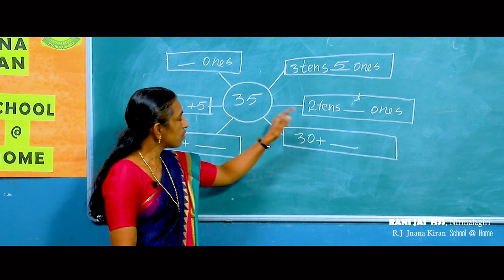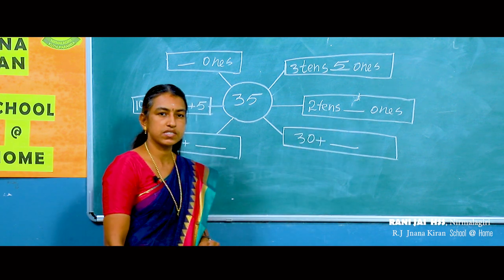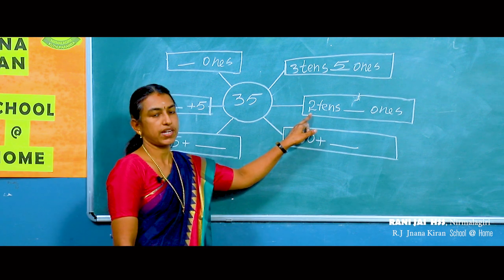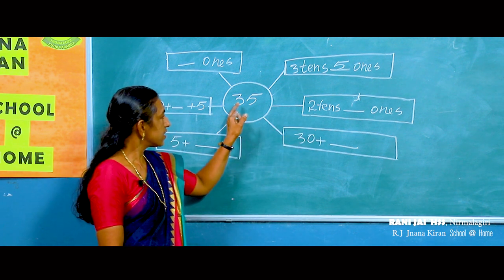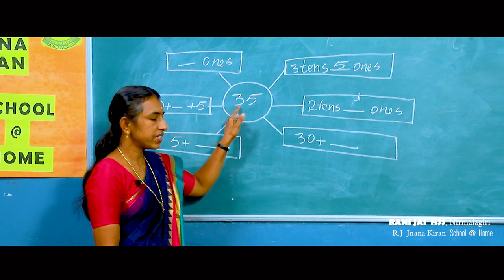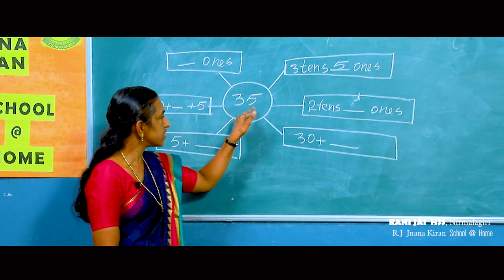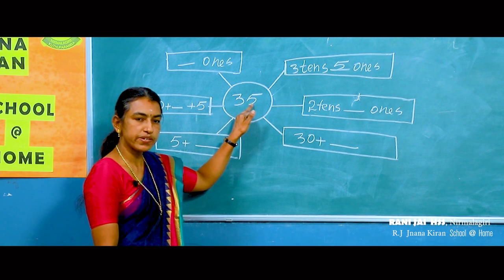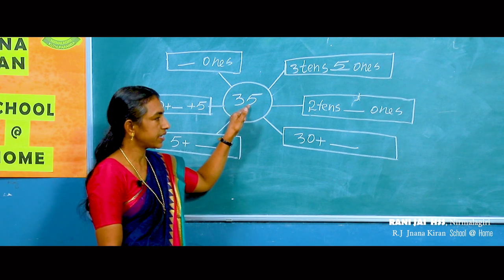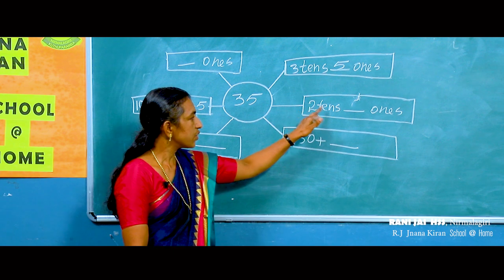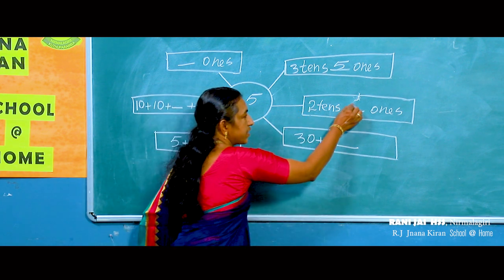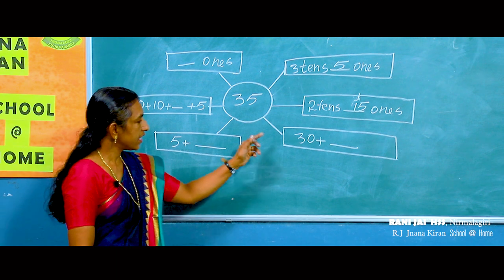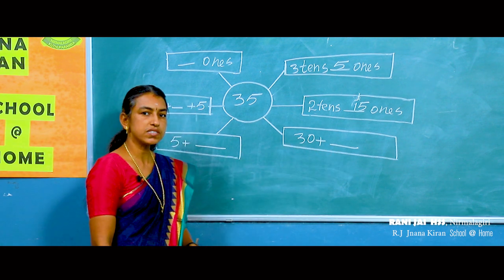Look at the second one: two tens and how many ones? Here we have two tens, but the number has three tens. That means one ten changes to ten ones. So ten ones plus five ones gives us fifteen ones. The answer is two tens and fifteen ones.